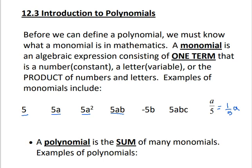So if it's just a term — you see just numbers or letters with no pluses or minuses in between them, they're just a product — then that's considered a monomial.